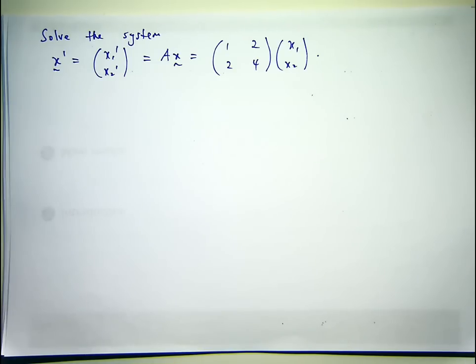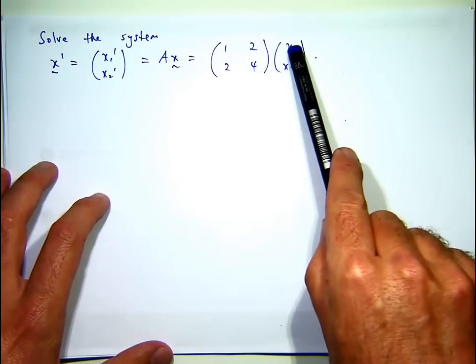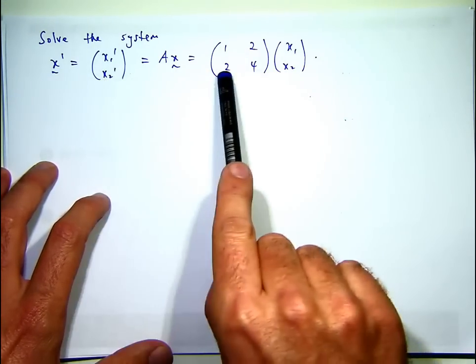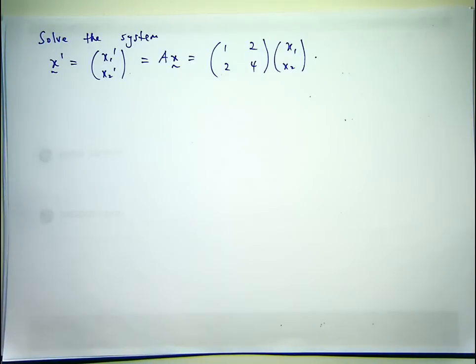You can think of this as two simultaneous ODEs: x1 prime equals x1 plus 2x2, and the second equation would be x2 prime equals 2x1 plus 4x2, so it's like an interlaced system of problems.